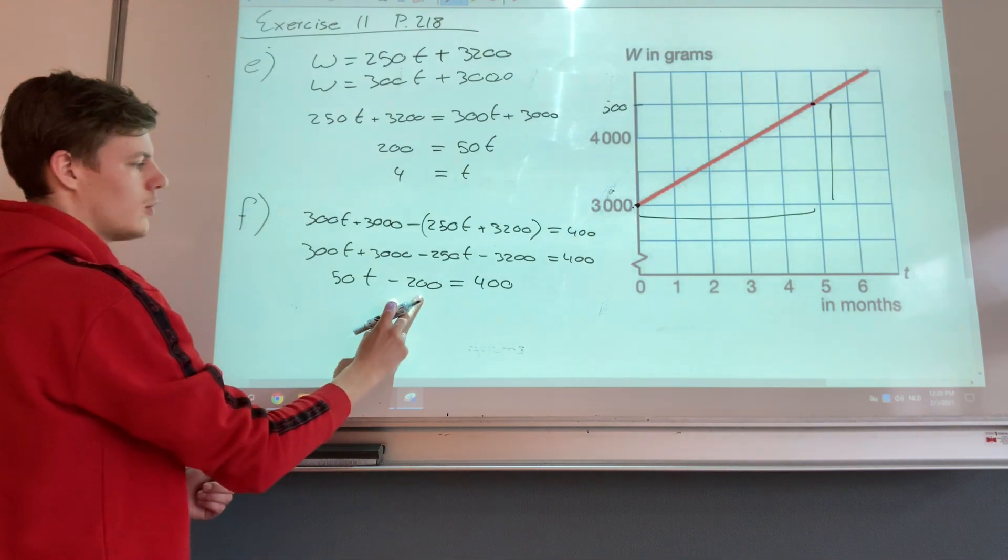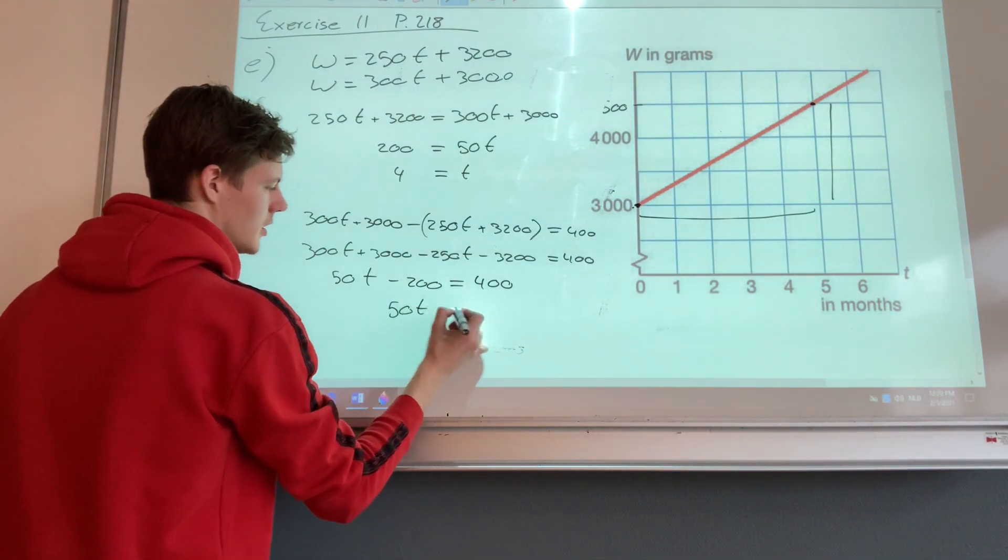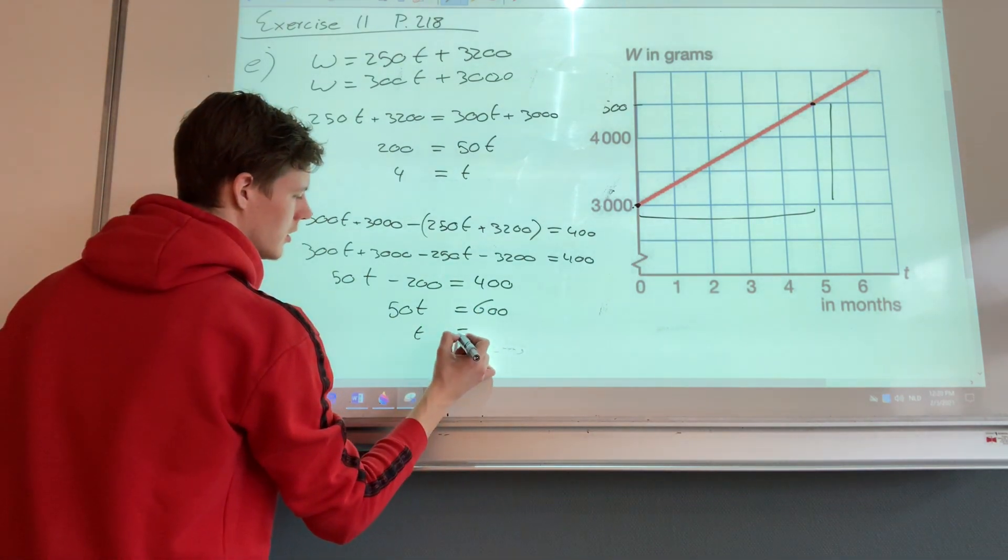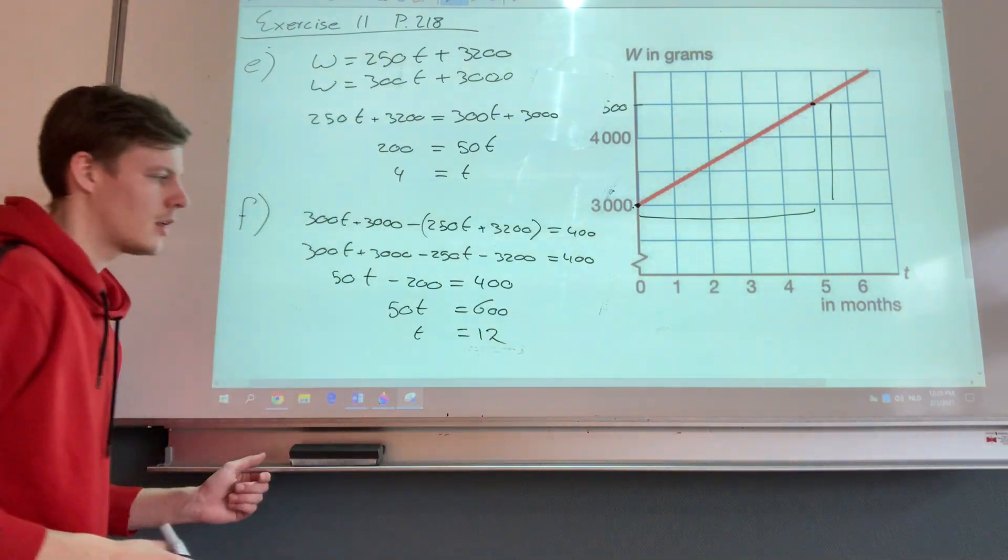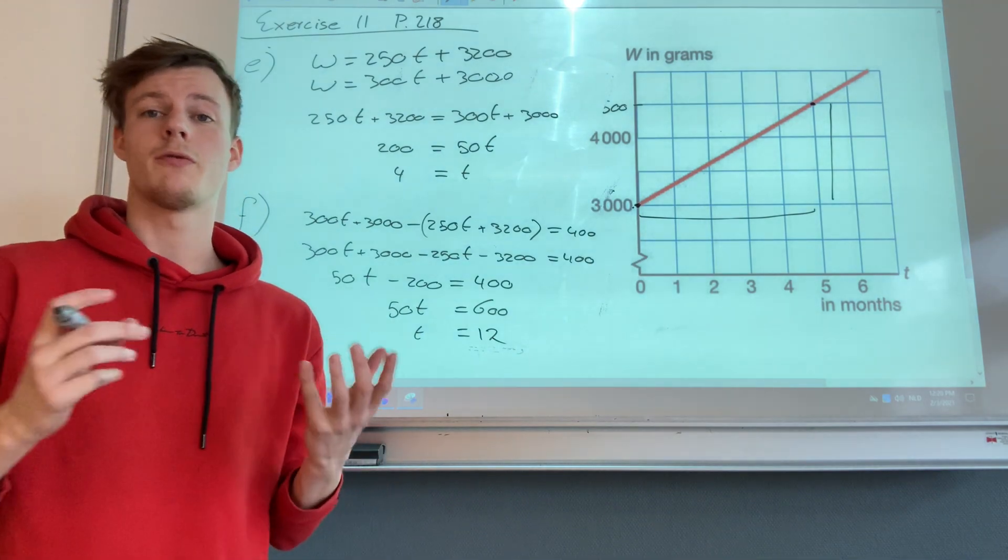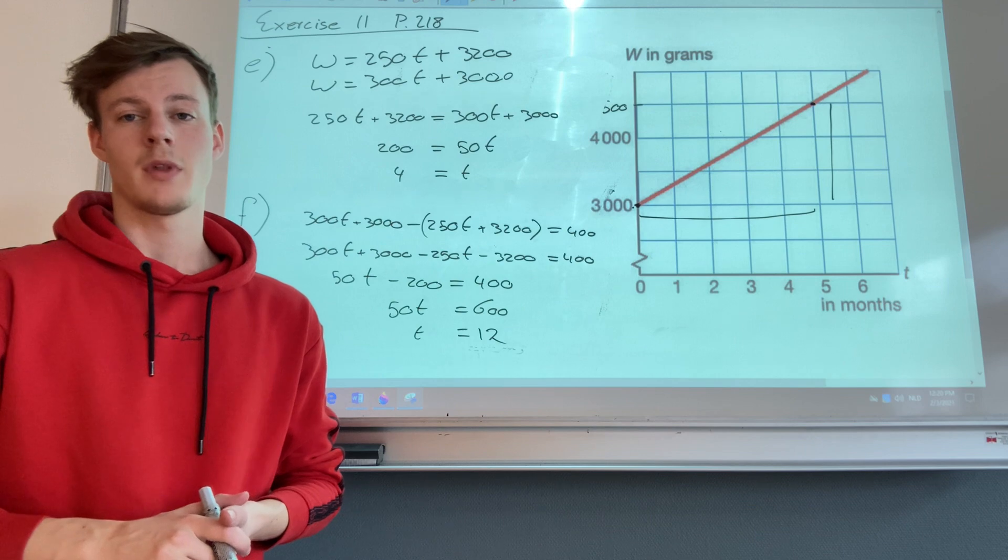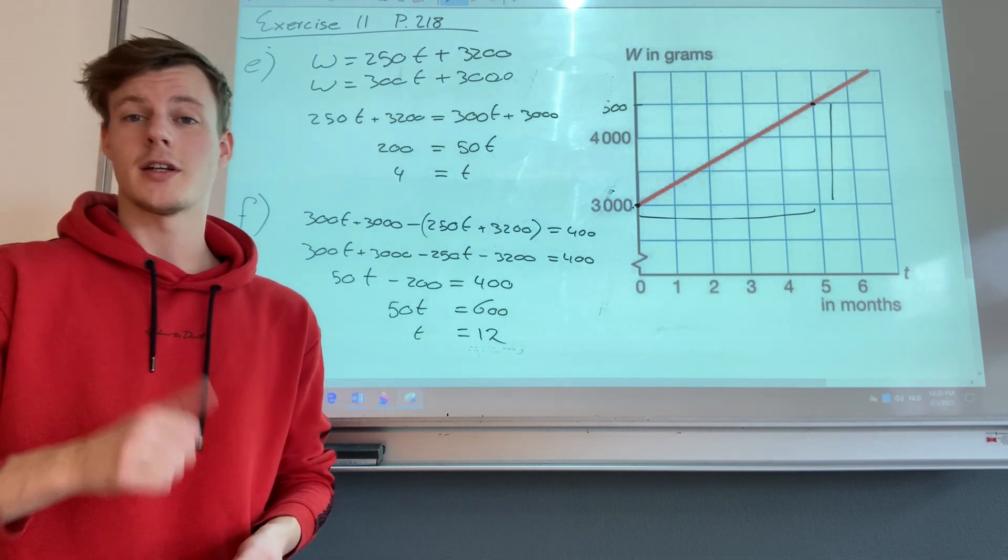Well, then we move minus 200 to the other side, which gives us 50t is 600. And then we divide by 50 on both sides, which gives us 12. So after 12 months, Maureen weighs 400 grams more than Michael. I hope you understand everything and see you next time.